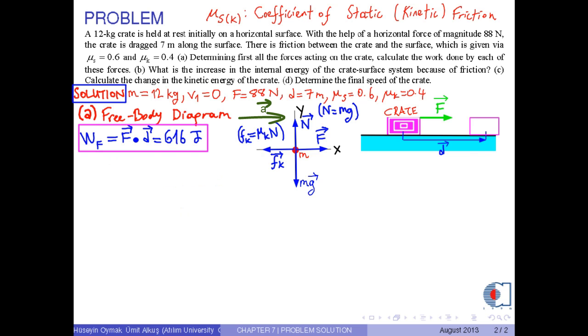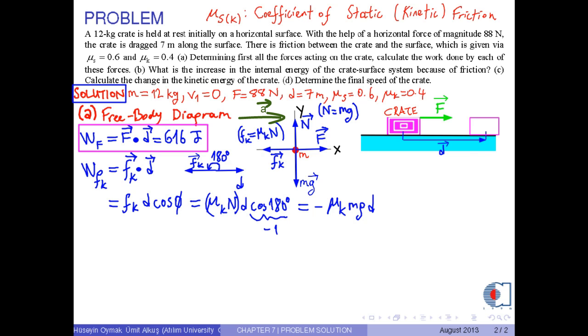The work done by the kinetic frictional force is calculated by the formula Fk dot D. The angle between them is 180 degrees. So, since Fk is mu k times n, also n is m times g, with the numerical values, we obtain negative 329.28 joules.